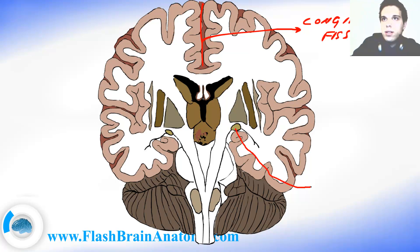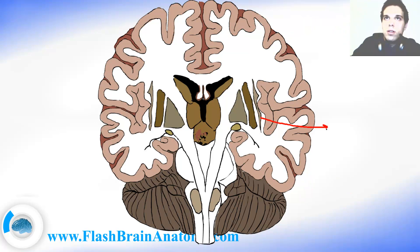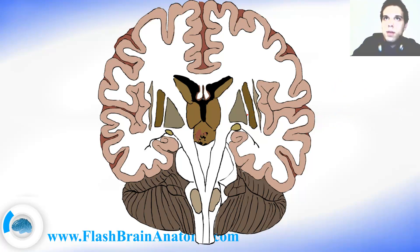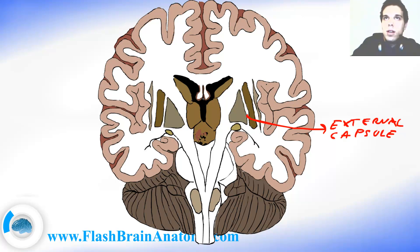We had the optic tract, and we had the claustrum right over here. More medial, we had the putamen, and even more medial we had the pallidum, which can be divided into medial pallidum and lateral pallidum. Then we had the external capsule over here, between the putamen and the pallidum, and we also had the extreme capsule over here, between the claustrum and the putamen.